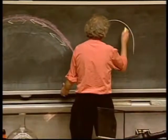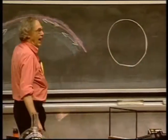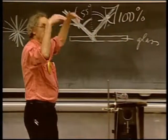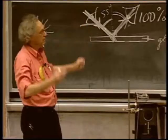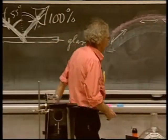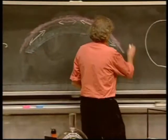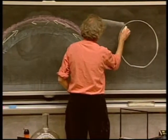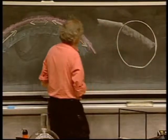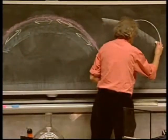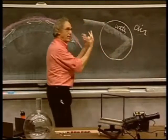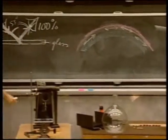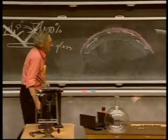The rainbow is formed when sunlight enters water drops — could be a waterfall, could be a garden hose, could be rain. It enters that water drop, so it comes in like here. When it enters it, it changes direction. In the back, some of it reflects. This is water and this is air. It can reflect off that transition just like light can reflect off air to glass, and then it comes out again.